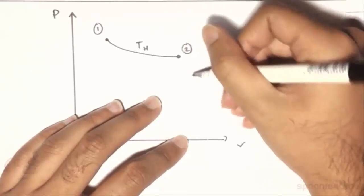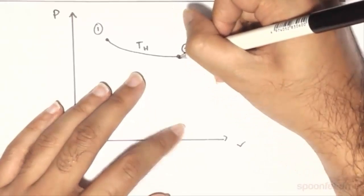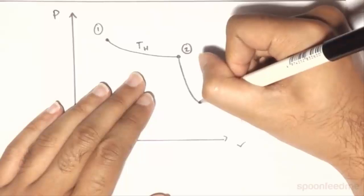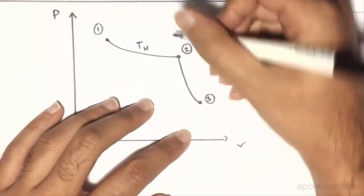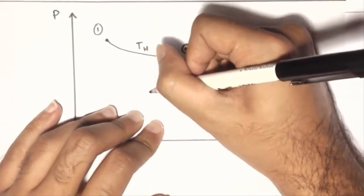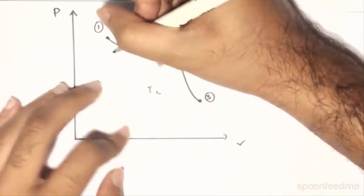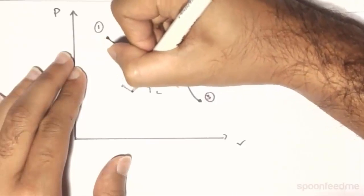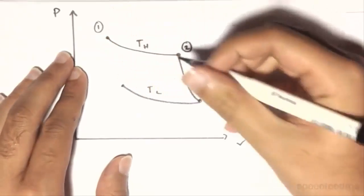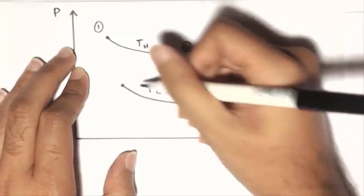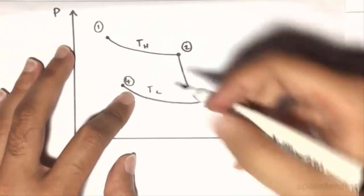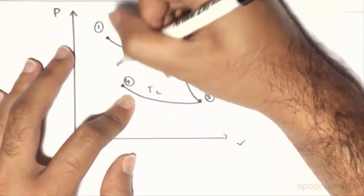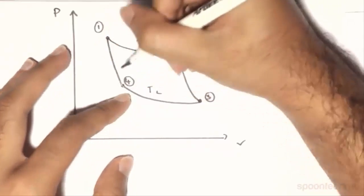Then after state 2, we have an isentropic expansion. So the V increases once again to state 3. And this matches up with the lower temperature isotherm, which is where it goes with the process 3-4, an isothermal compression. Then finally, there's the isentropic compression back to the original state.